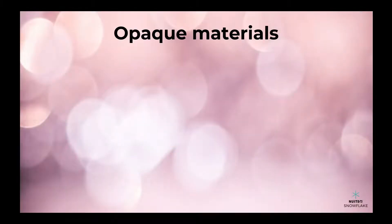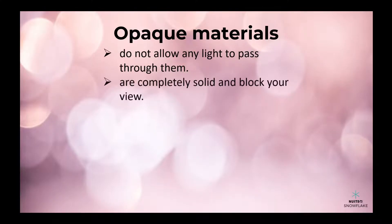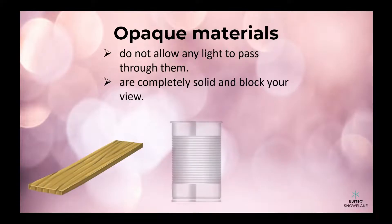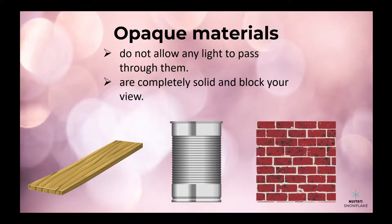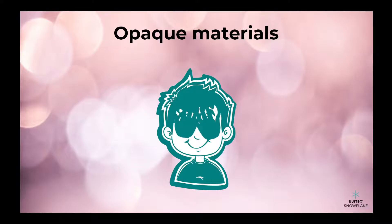On the other hand, opaque materials do not allow any light to pass through them. They are completely solid and block your view. Examples of opaque materials include wood, metal, and brick walls. When you close your eyes and cover them with your hands, you are experiencing an opaque material blocking the light from entering your eyes.